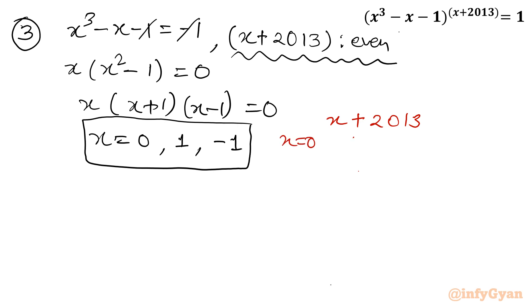Now we will only accept those which is making power even. Let's verify it. So I will put x equal to 0. So 0 plus 2013, 2013. It is odd. So we will reject. x equal to 1, 1 plus 2013, 2014, even number. Accepted.